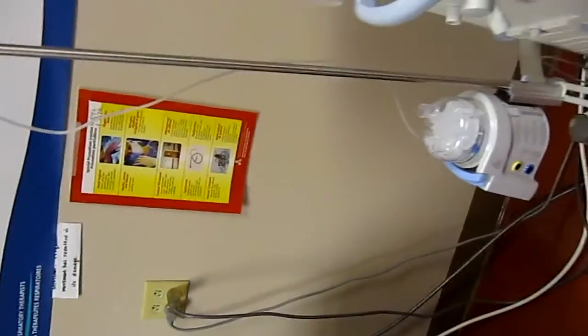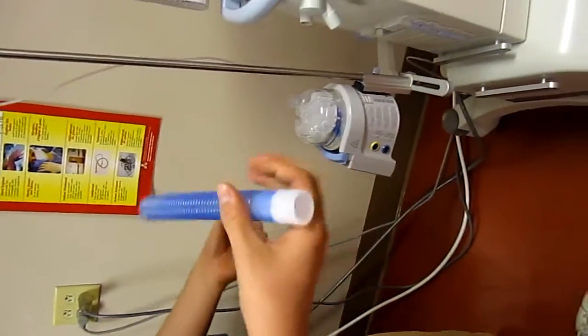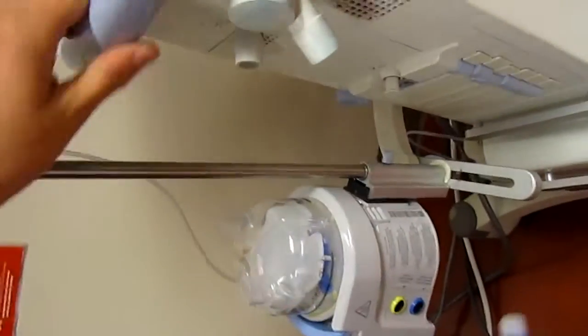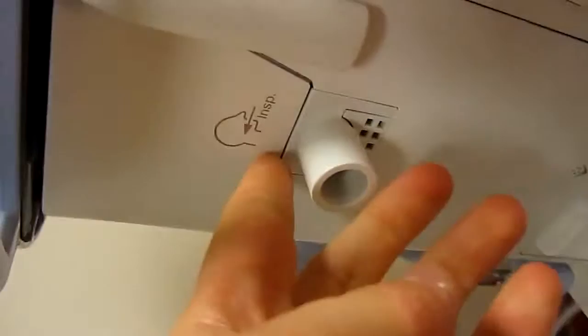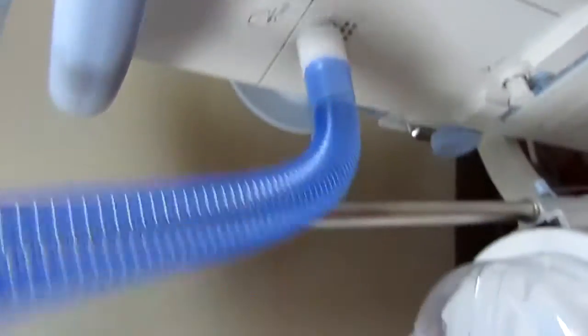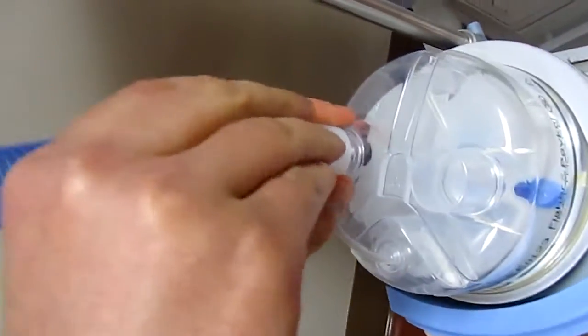The next thing you usually do is set up the inspiratory circuit. It's pretty much always blue. You can see on the side, it tells you which one's the inspiratory and which one's the expiratory. So it's pretty hard to screw it up. Straight from the side to this.